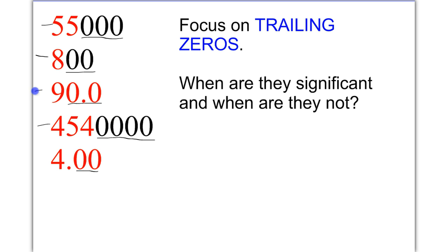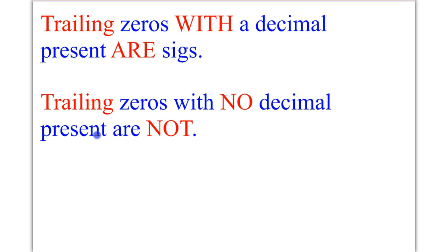However, in 90.0 and 4.00, these are trailing zeros and there's a decimal present. So because they are trailing with a decimal present somewhere, they are going to be considered significant. Trailing zeros with a decimal present are significant. Trailing zeros with no decimal present are not significant.